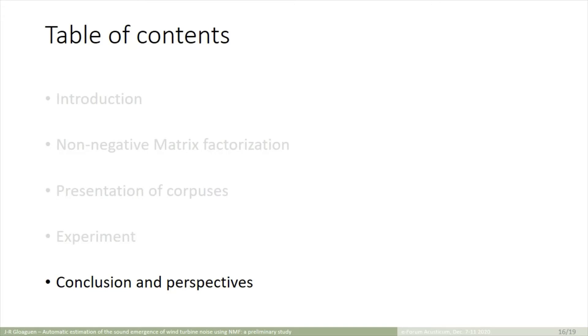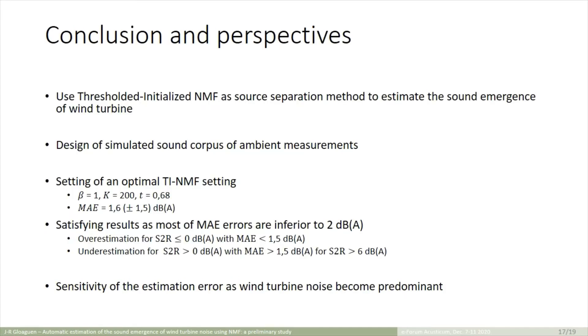So, to conclude, we presented here a first sound emergence estimator of wind turbine noise, based on a source separation with non-negative matrix factorization. To test this method, we used a first set of simulated ambient noise measurements. The experience carried out allowed to test the capacities of NMF to adapt to this sound source, and also to define a first optimal setting. We saw that the errors were mainly satisfying, as they were inferior to 2 dBA.